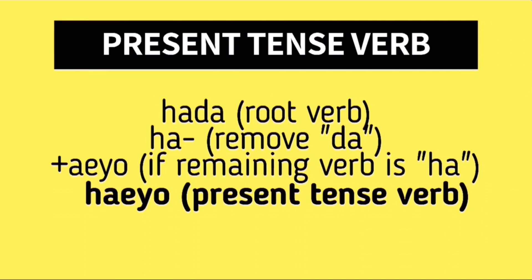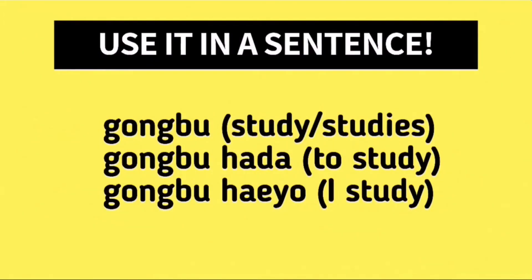Hada is our root verb and Heo is the present tense form of Hada. Kongpu is the term for study or studies, so when we say Kongpu Hada it's the act of studying, and Kongpu Heo is the present tense form of studying. We are able to create a verb Kongpu Hada out of Kongpu and Hada, and this is a common pattern in Korean — some nouns can be transformed into a verb by just adding Hada to it.